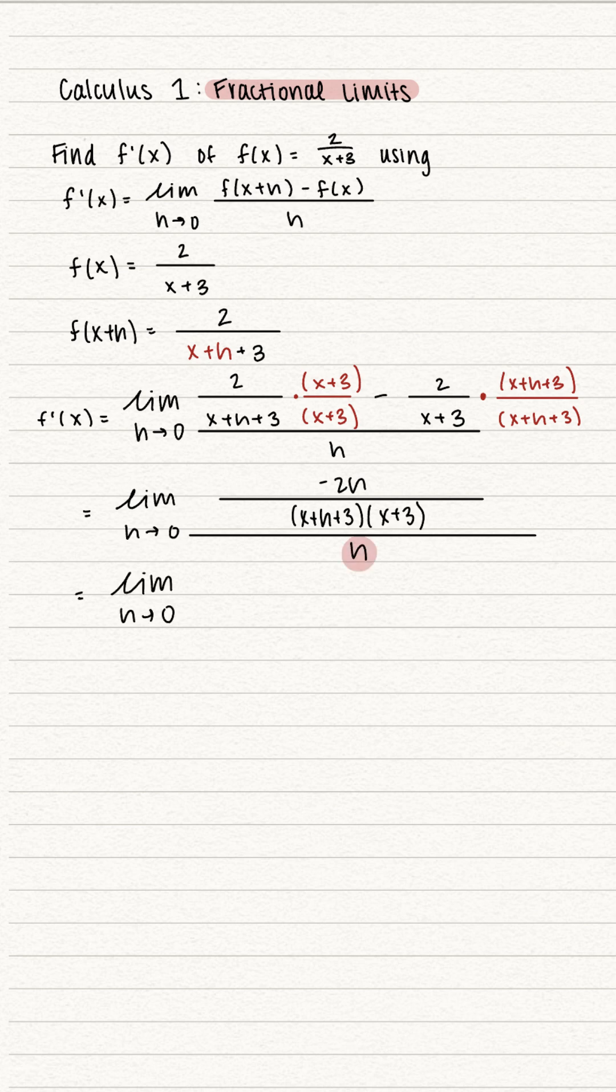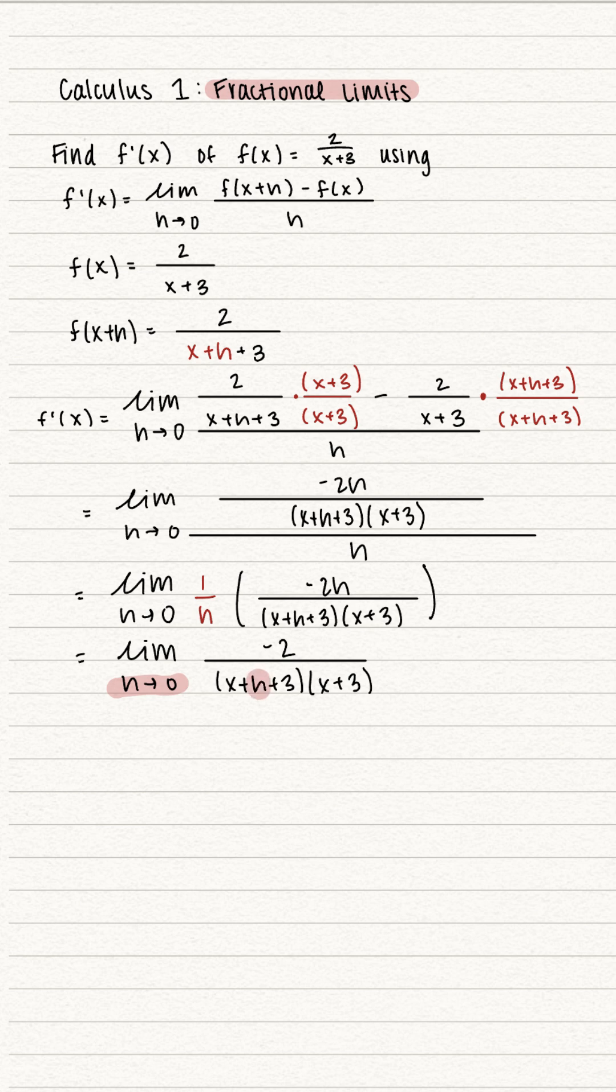Let's rewrite this. I'm going to bring this h over as 1 over h, and we're going to multiply it by the numerator, and we can see here this helps us out because these h's cancel out. Now all we're left with is that negative 2 in the numerator, and we can evaluate the limit as h approaches 0.